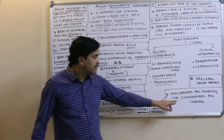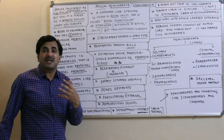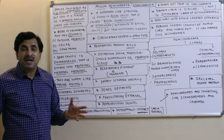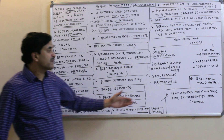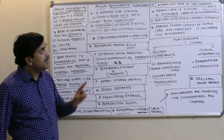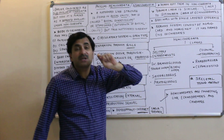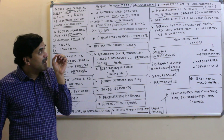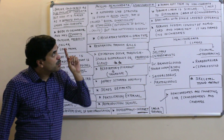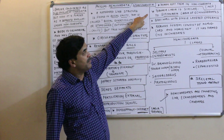The tornaria larva is similar to the bipinnaria larva and also the auricularia larva of echinoderms. Because of these similarities with echinoderms and also similarities with chordates, hemichordates are considered a connecting link between echinoderms and chordates. Since echinoderms are non-chordates, hemichordates can be called a connecting link between non-chordates and chordates.